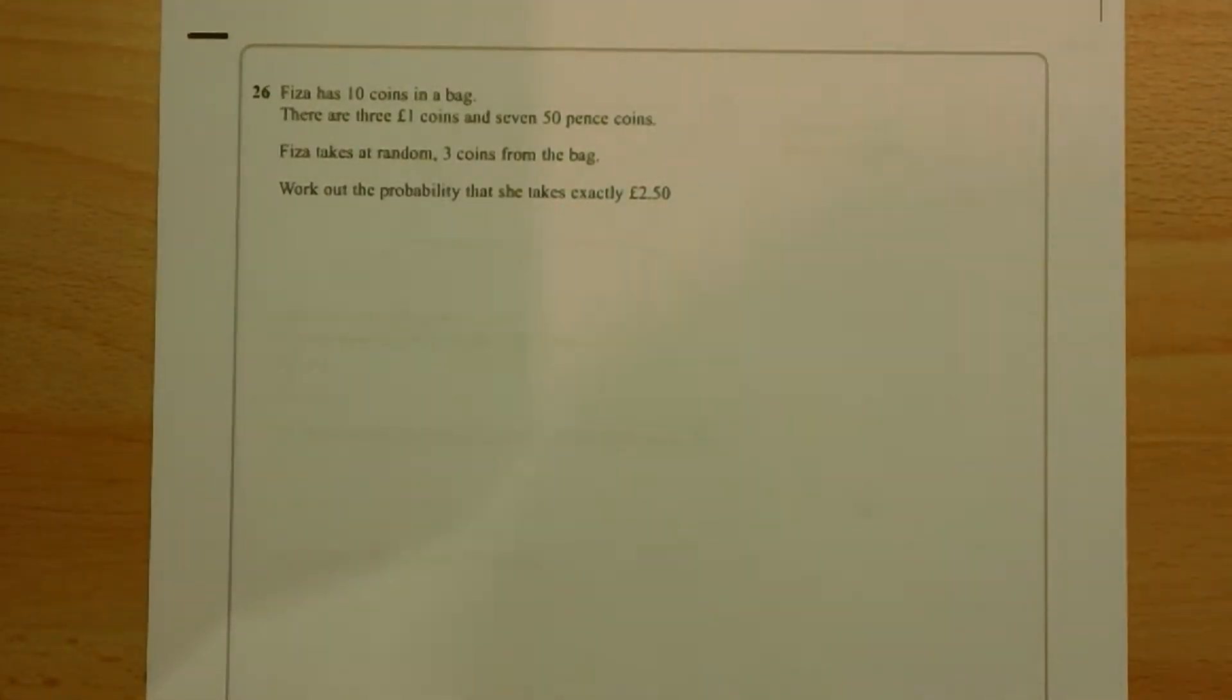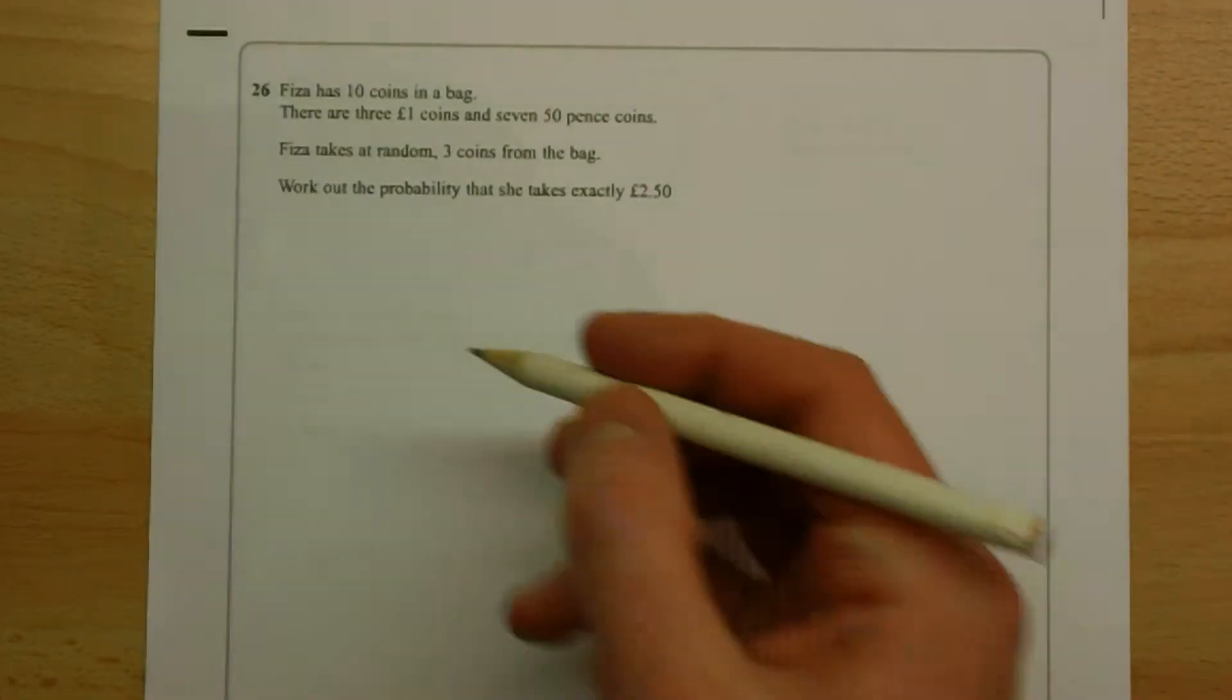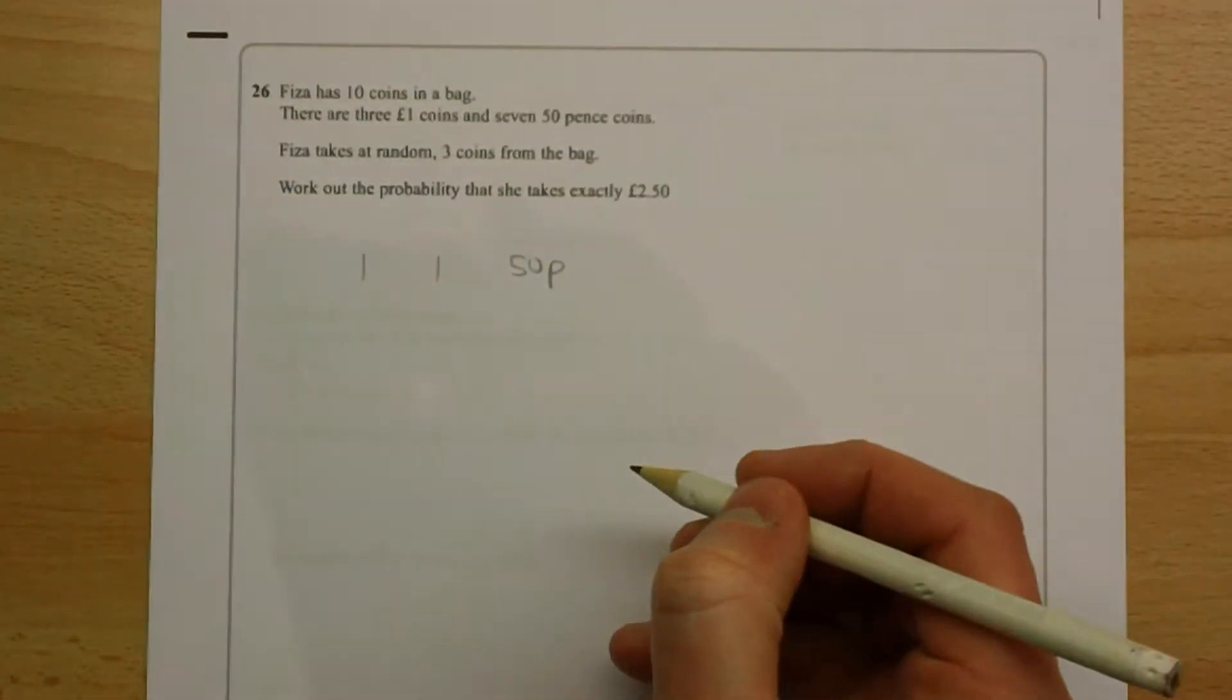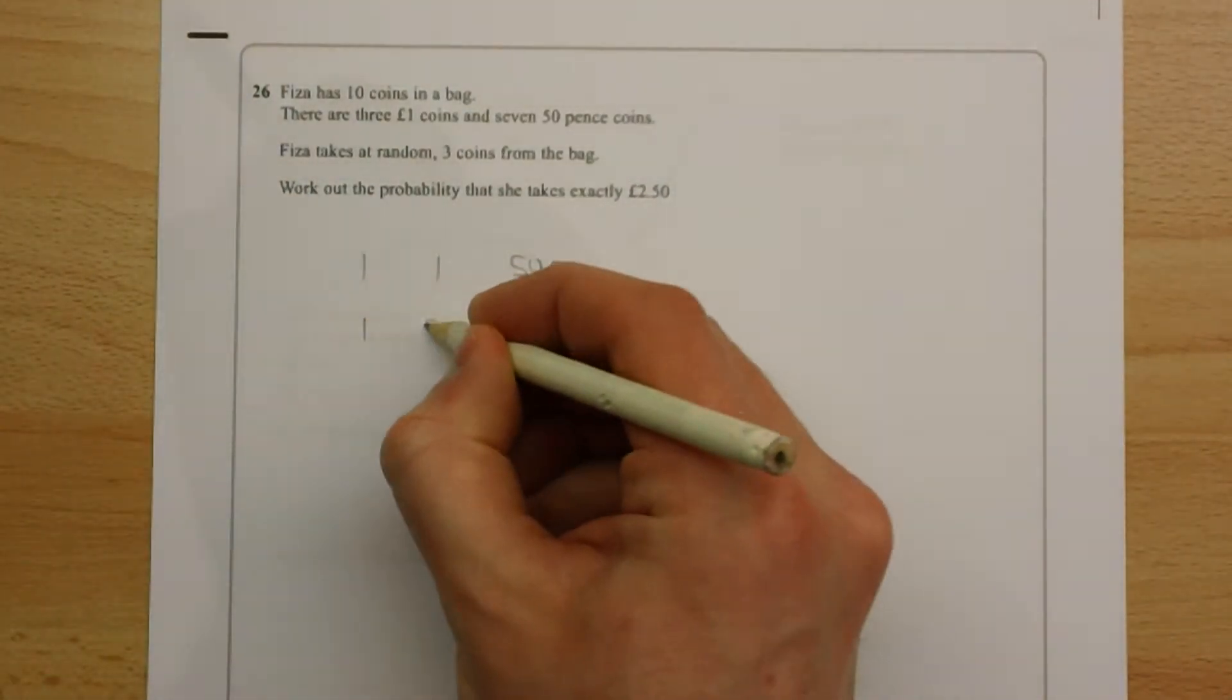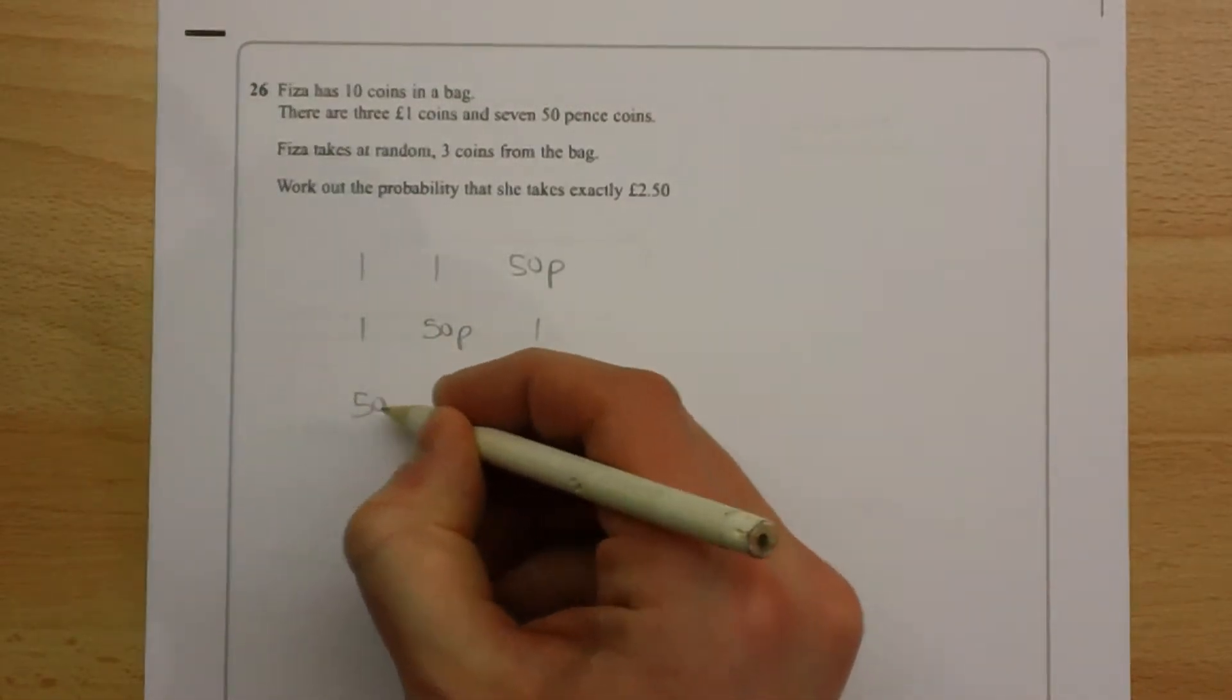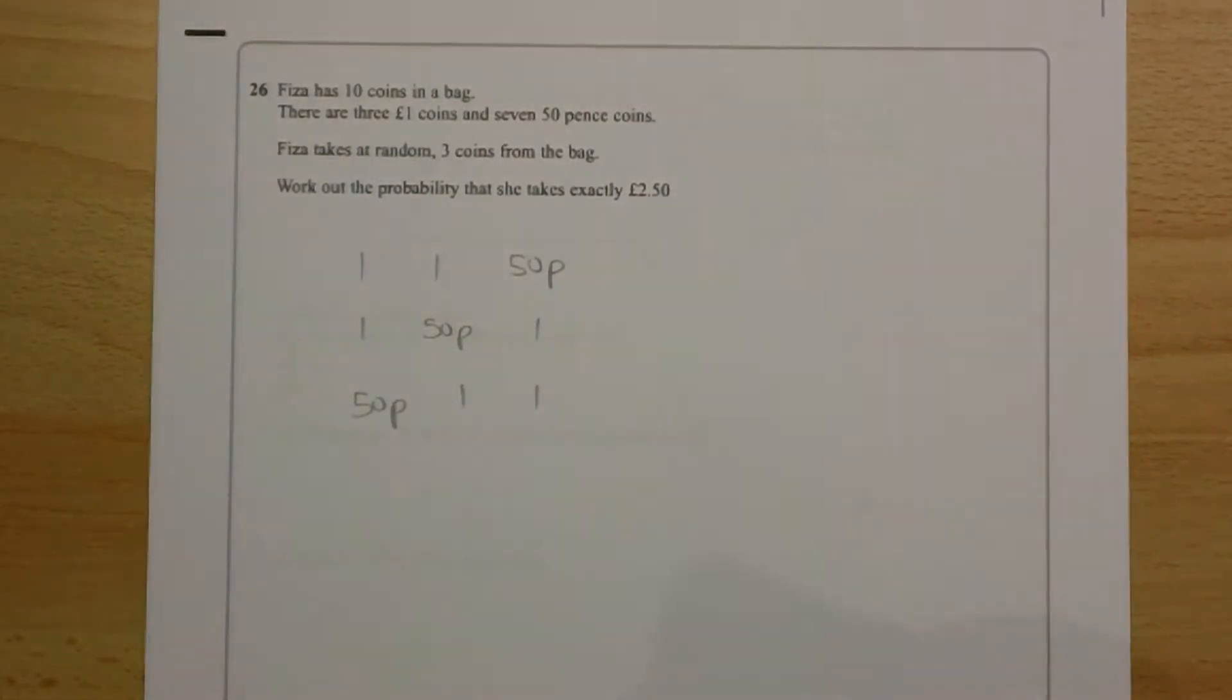The only way you can get £2.50 by taking out 3 coins is to take out 2 £1 coins and one 50 pence piece. Now you could pull out a pound and a pound and a 50 pence, or you could pull out £1 and then the 50 pence and then a pound, or you could pull out the 50 pence first, a pound and then a pound.